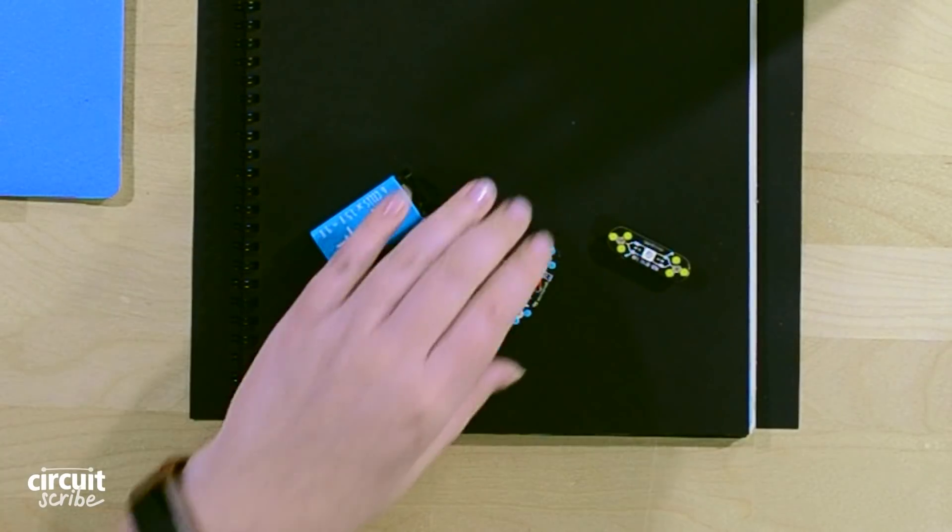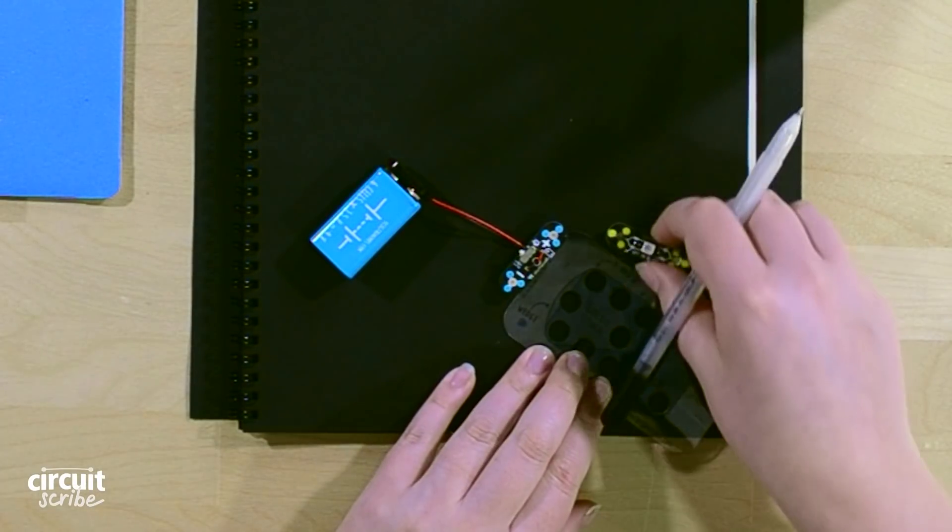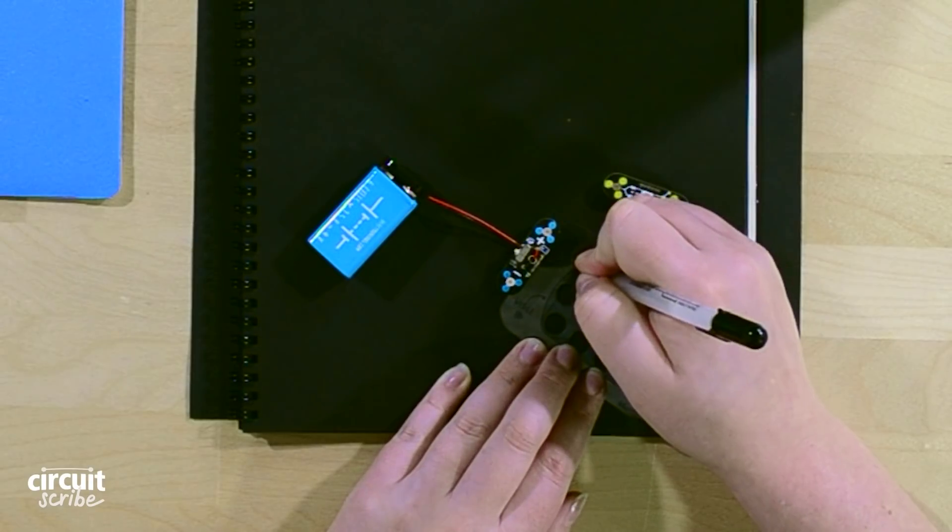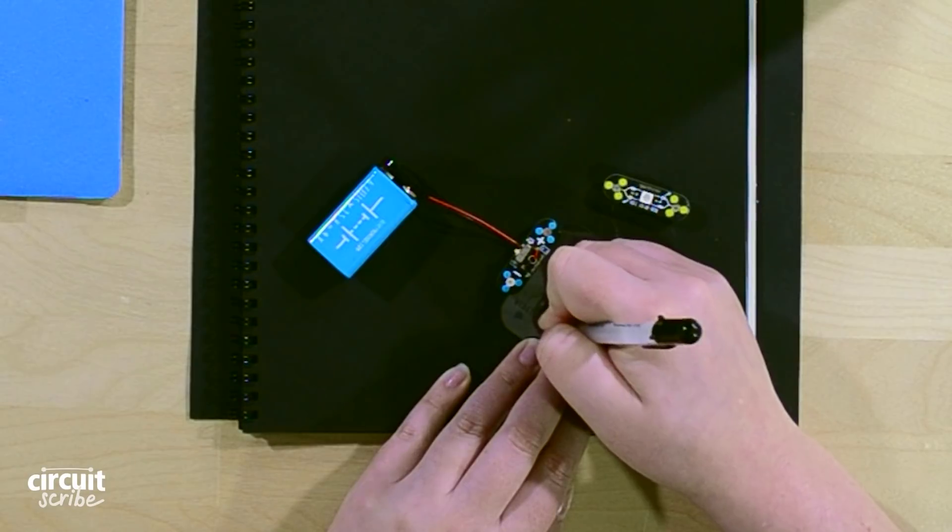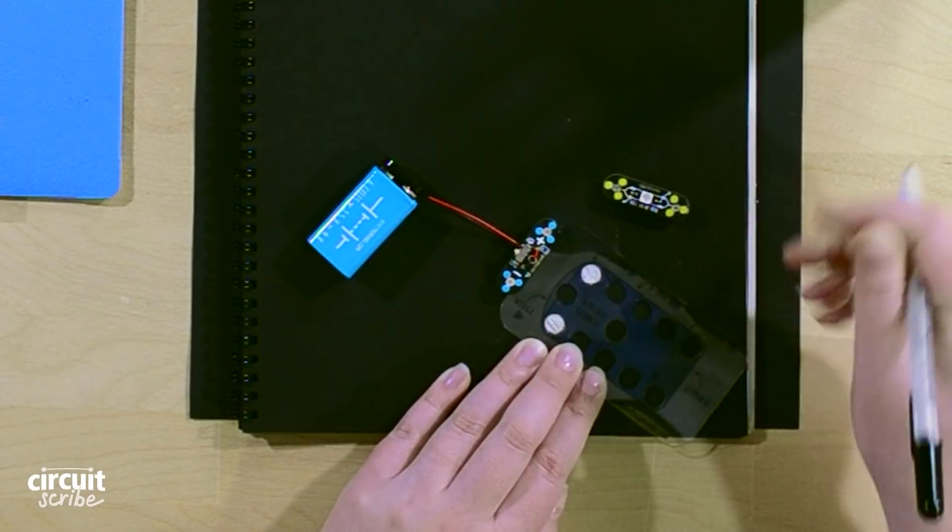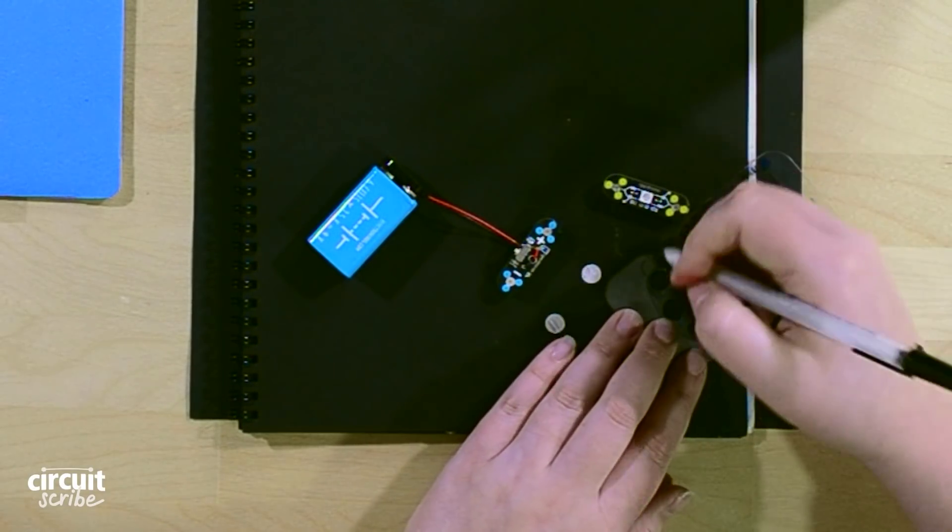So what we're going to do is draw a place for our power to go, and then a place for our LED to go.